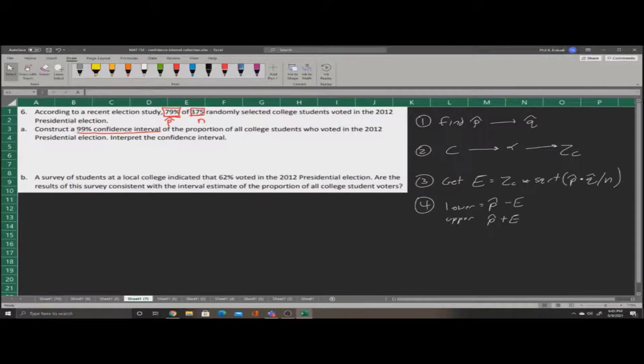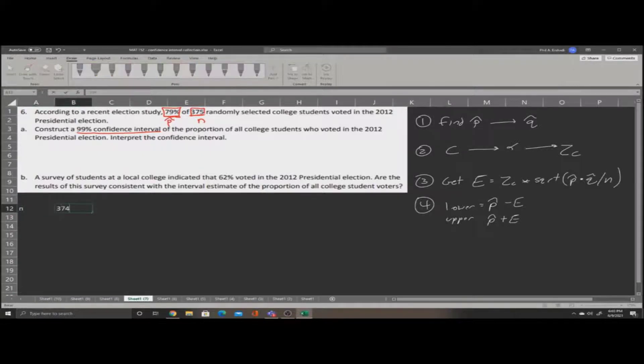Let's begin by entering what we know. We have an n of 375. We have a p-hat of 79%, we'll say 0.79. We also have a confidence level of 99%. I'll leave a space there because we must also get q-hat.